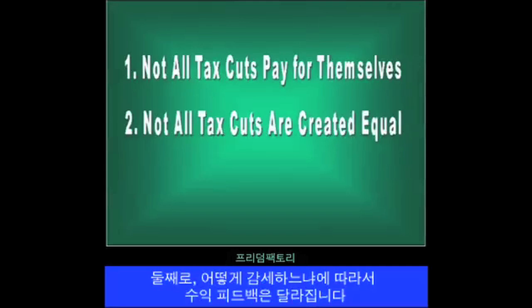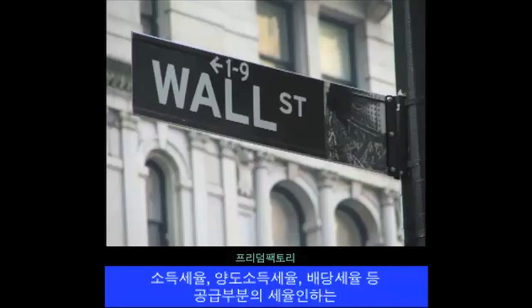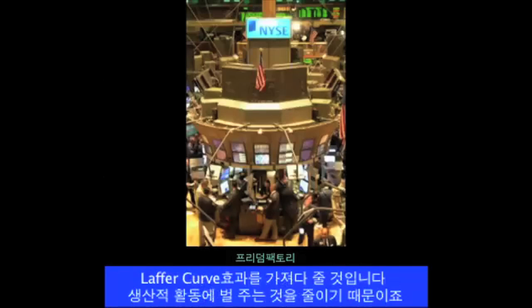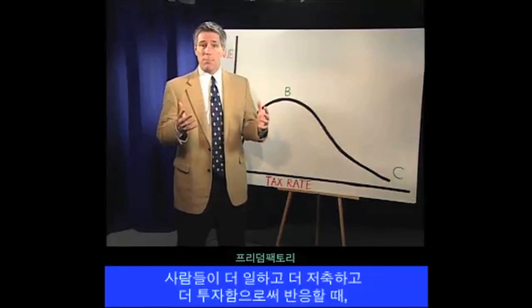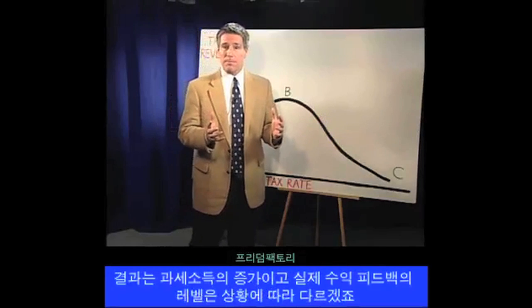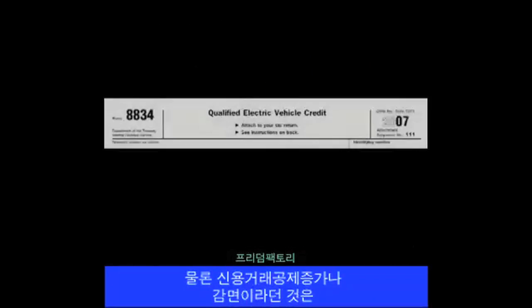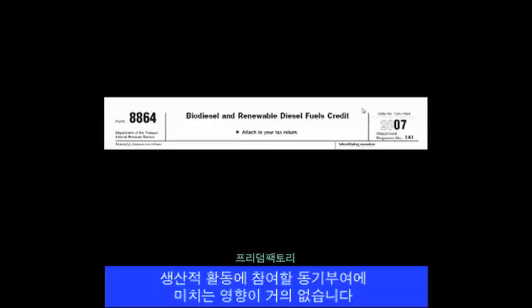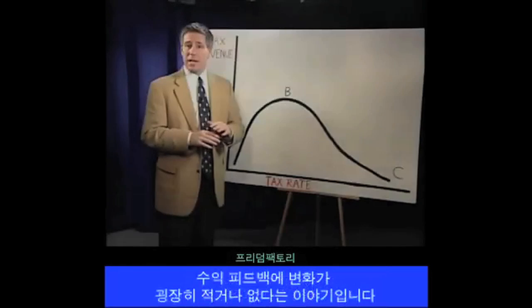Second, the amount of revenue feedback varies depending on how you cut taxes. Supply-side tax cuts such as income tax rate reductions, capital gains tax rate reductions, and dividend tax rate reductions will generate Laffer Curve effects because they reduce the tax penalty on productive behavior. And when people respond by working more, saving more, and investing more, the result is more taxable income. Other tax cuts, though, such as expanded credits, deductions, and exemptions, are unlikely to have any significant impact on incentives to engage in productive behavior, because the marginal tax rates on additional increments of work, saving, and investment are probably unchanged. This doesn't necessarily mean these are bad tax cuts — it just means they don't lead to meaningful changes in taxable income, so there is little or no revenue feedback.